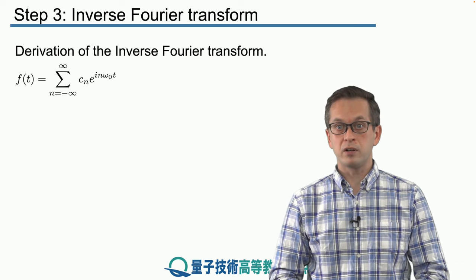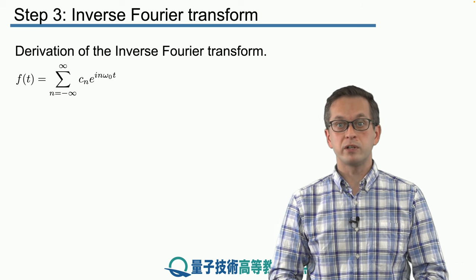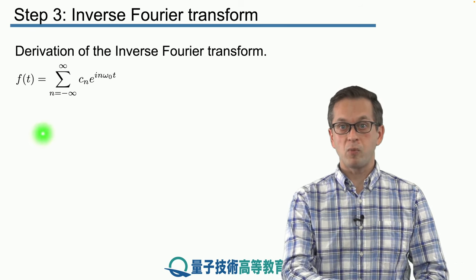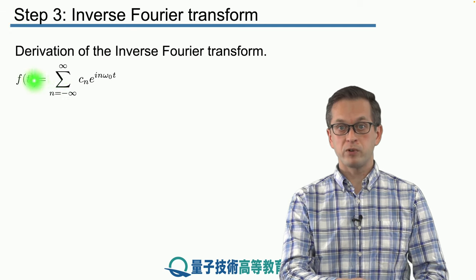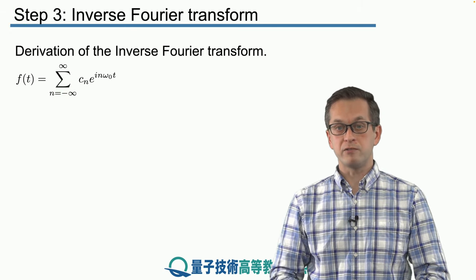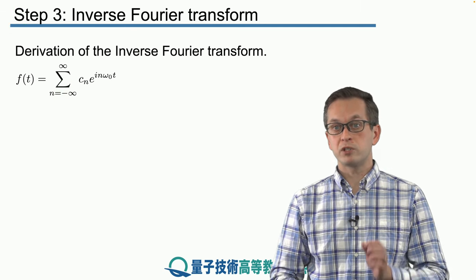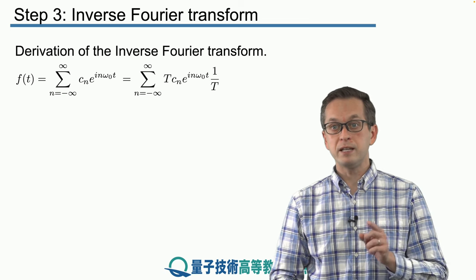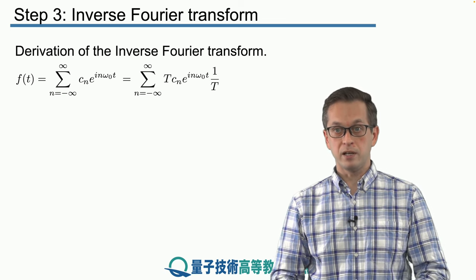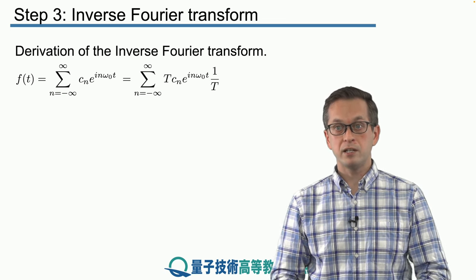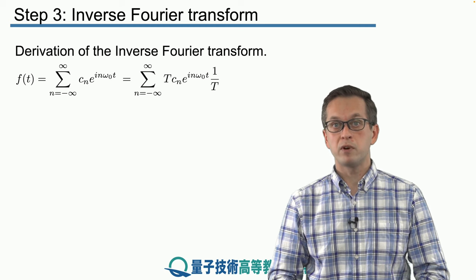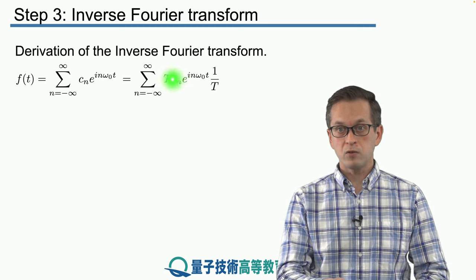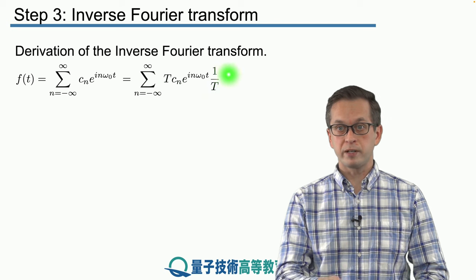We're going to start our inverse Fourier transform derivation with the complex Fourier series. We've got our familiar series here, and what we do is multiply by one — specifically by T over T, where T is the period of our function. So we've got the following expression.